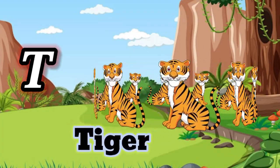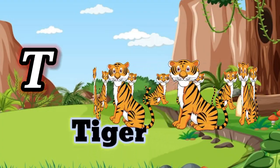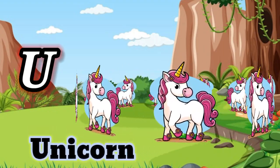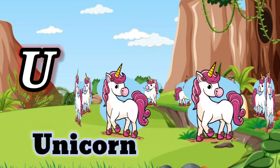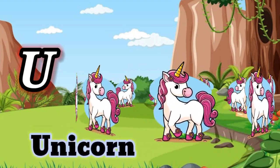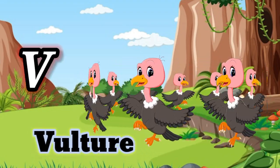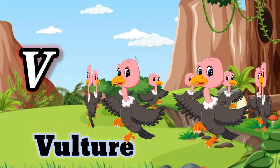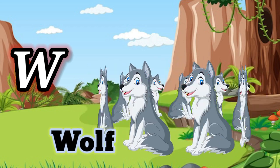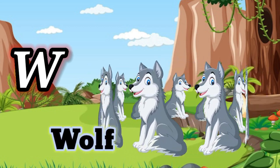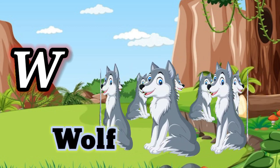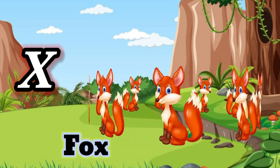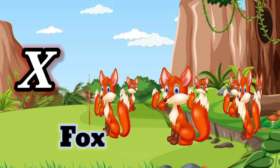T is for Tiger. U is for Unicorn. V is for Vulture. W is for Wolf. X is for Fox.